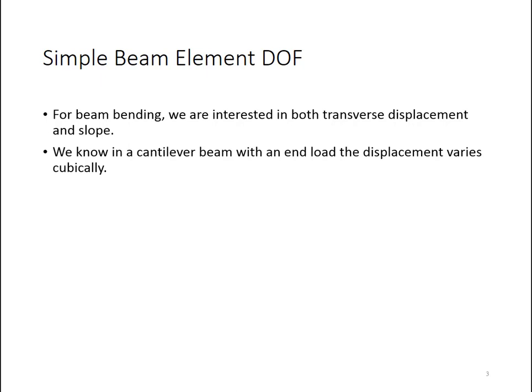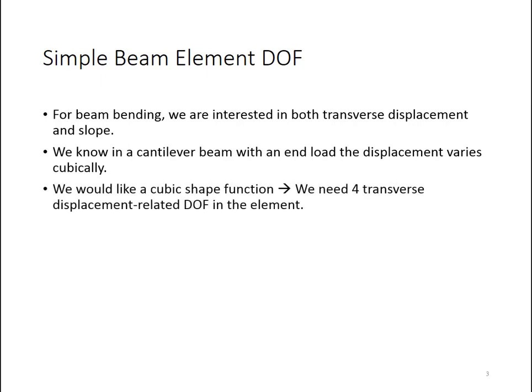Secondly, we know that a cantilever beam with an end load has a displacement that varies cubically. Inside of any beam which just has point loads, we would expect a cubic variation of displacement. So it would make sense to try to come up with a cubic variation. Because we want a cubic shape function, we need four degrees of freedom associated with the transverse displacement direction. If we only have two nodes in an element, there's only one good way to get additional degrees of freedom, and that's to include rotational degrees of freedom.